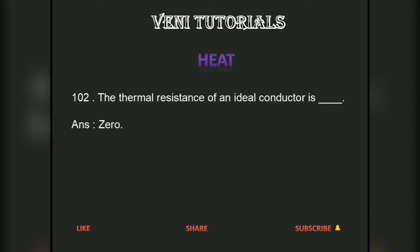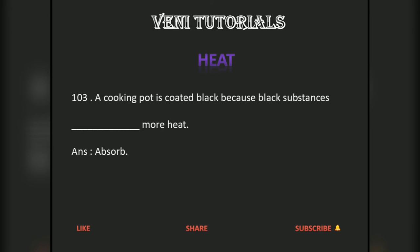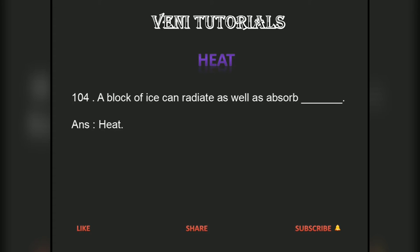The thermal resistance of an ideal conductor is 0. A cooking pot is coated black because black substances absorb more heat.